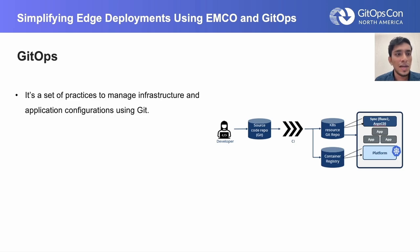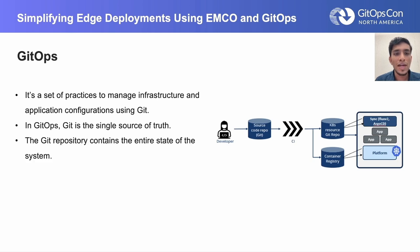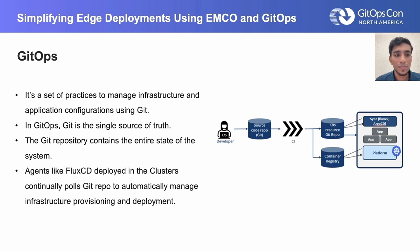Technically, GitOps is defined as a set of practices to manage infrastructure and application configurations using Git. Git is an important point here — Git is a single source of truth. The entire state of the system is monitored and tracked in Git itself. We have agents like Flux CD or Argo CD deployed in the cluster to continuously monitor this repo and do the job of deployment of applications.